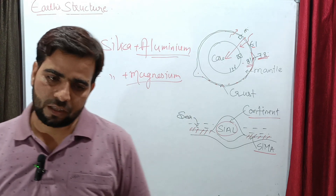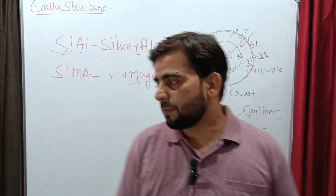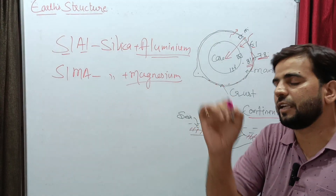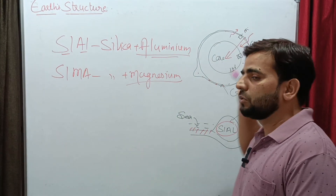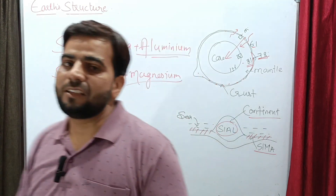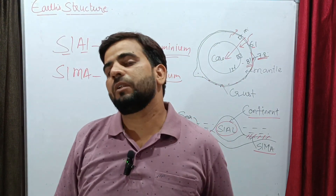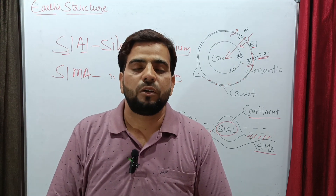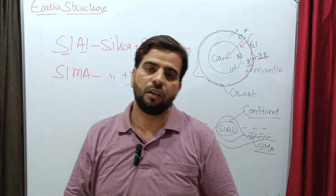Regarding temperature: the upper part of the crust is estimated to be near zero degrees. As we move from the crust towards the core — towards the center of the Earth — temperature continuously increases. The temperature of the core is nearly 4,400 to 6,000 degrees Celsius, which is comparable to the upper part of the Sun.